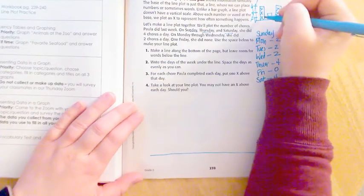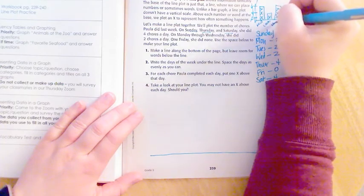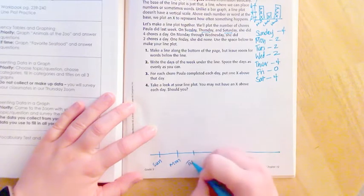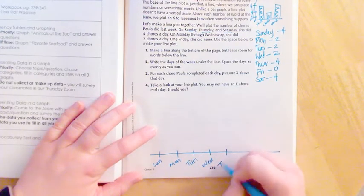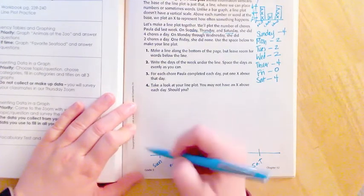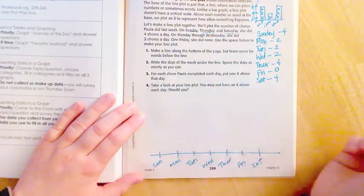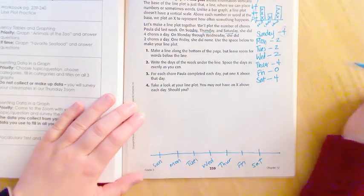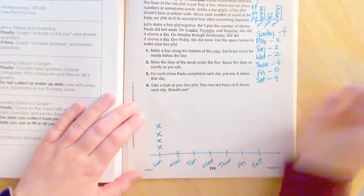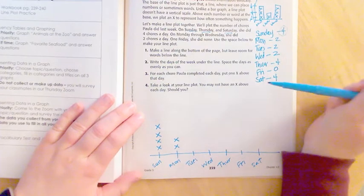I'm gonna draw a line but I'm gonna leave a little bit of space below, but I'm still towards the bottom because remember our information has to go up. Number two, write the days of the week under the line. So Sunday, Monday, Tuesday, Wednesday, Thursday, Friday, Saturday. We do not have a vertical line, we're not doing a scale up the side. Number three, for each chore Paula completed, put one X above that day. For Sunday she did four chores, so I'm gonna put four X's: one, two, three, four. And then I'm gonna continue on Monday she did two and so on and so forth.